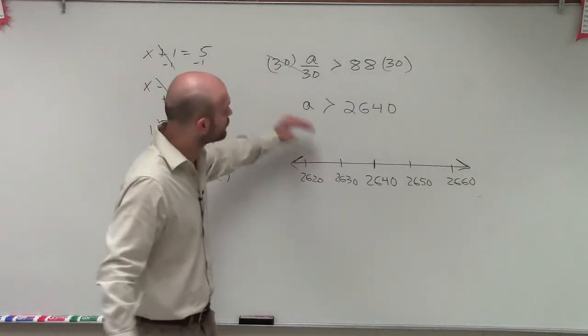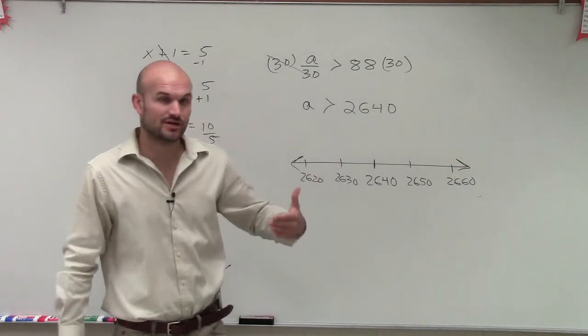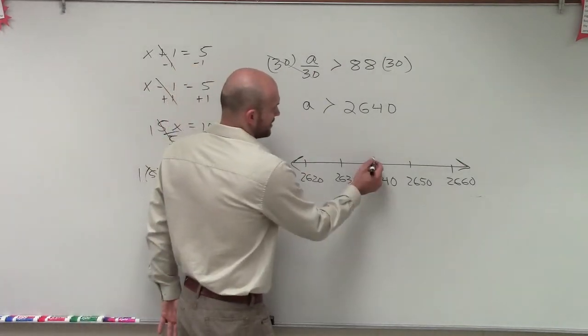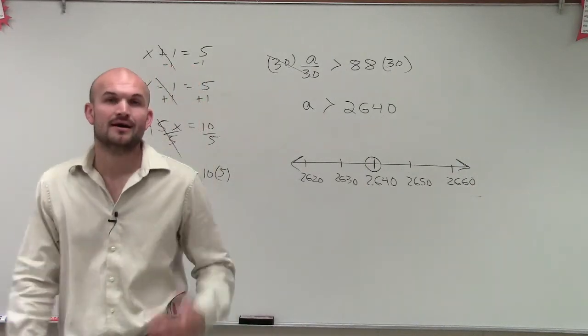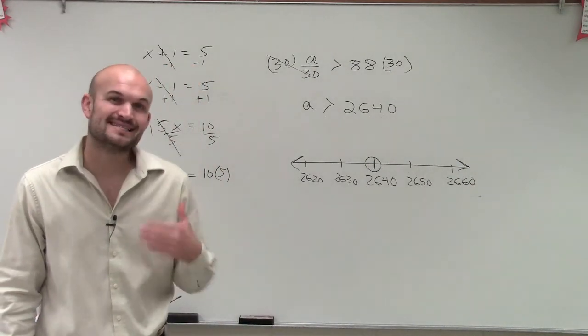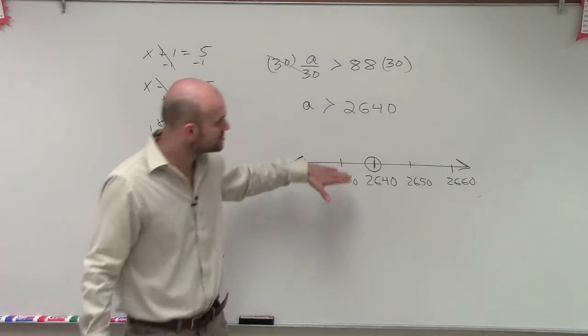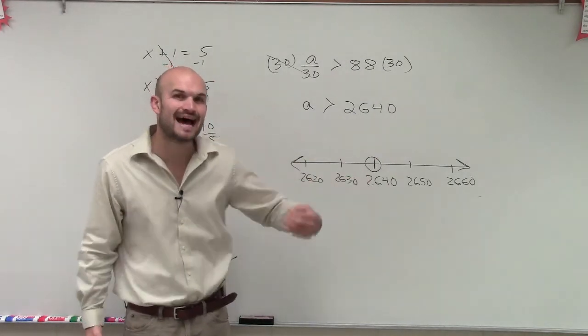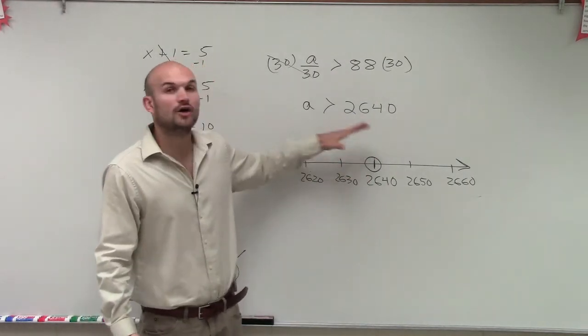This says a is greater than 2,640. So I'm going to start at greater than. So I'm going to make a nice circle at 2,640. However, I said greater than. I did not say greater than or equal to. So therefore, 2,640 is not a solution of this inequality.